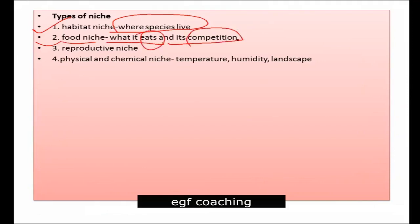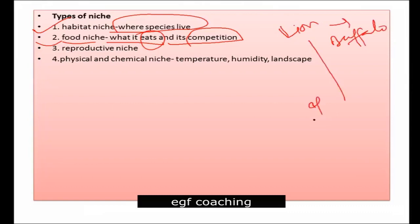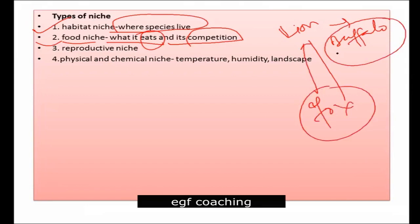Which species is competing with your animal? For example, when a lion kills a buffalo, a fox is also competing with the lion for that buffalo. This is competition in the food niche — the lion is a larger animal, and the fox is competing with it. So food niche covers what an organism is eating and what competition it faces.